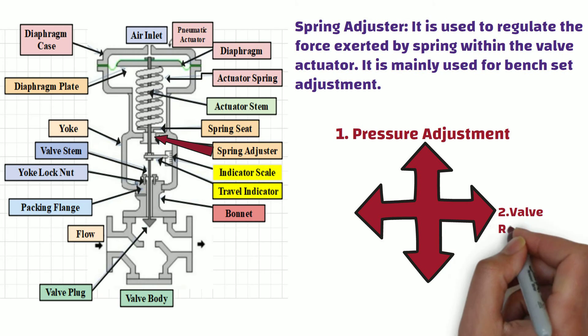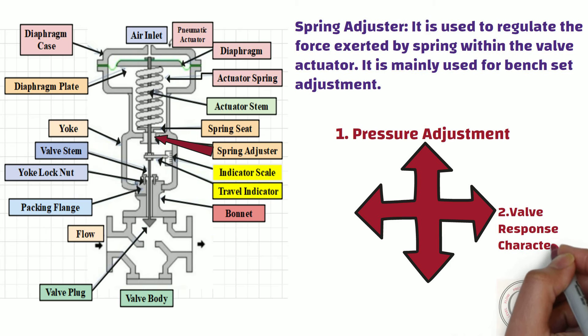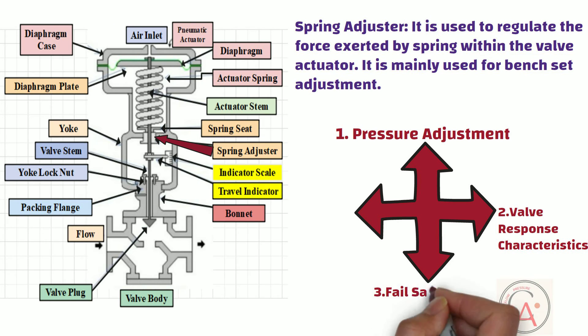Secondly, it can be used for fine-tuning the valve response characteristics to meet the process requirement. It can also be helpful as a fail-safe mechanism. If there is a loss of pneumatic pressure or control signal, the spring returns the valve to a predefined position, usually fully open, fully closed, or some intermediate position. Adjusting the spring tension can determine the fail-safe position of the valve in case of actuator failure or loss of control signal.